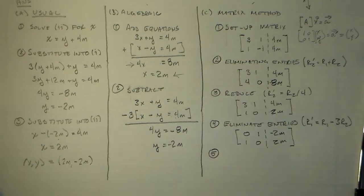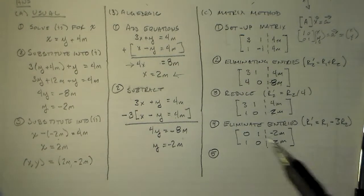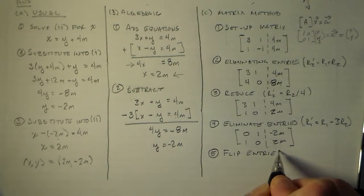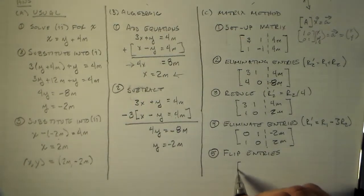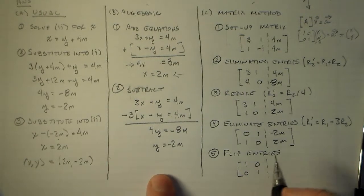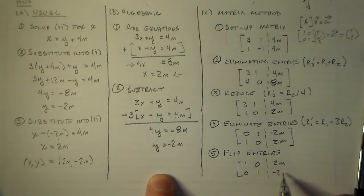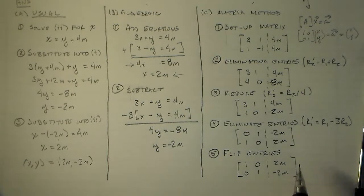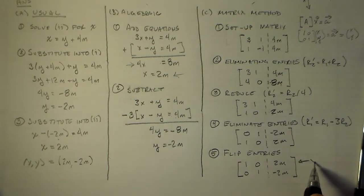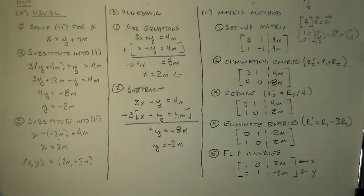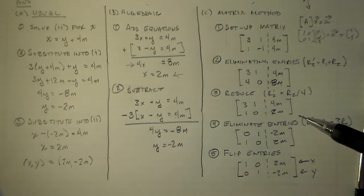So we're doing the same thing with the matrix that we had done with algebra over here. And again, the reason why this is going to be important is because this procedure, you can't really automate very well. It's kind of difficult. But in this case, you've just got a bunch of numbers in a matrix and in a table that you can manipulate based on their positions, based on some simple rules. So this is just a much simpler, more algorithmic procedure.